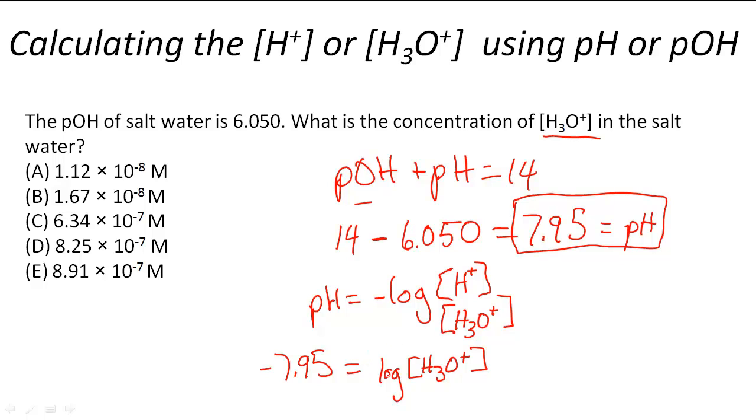And now to undo a log, you raise it to the 10th power. So when I raise this to the 10th power, I'm going to be left with the concentration of H3O positive on the right side. And here when I raise this, I'm going to have 10 to the negative 7.95 power. And when I do that, I get that the concentration of H3O positive is going to be 1.12 times 10 to the negative 8th molar.